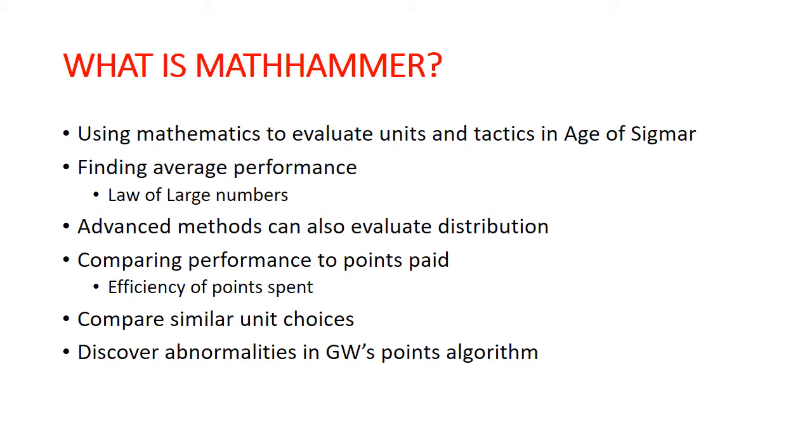So rather than saying this unit does 10 wounds on average, you can say that X percent of the time it's going to be between 8 and 12. And that will give you a little bit better of an idea of what to really expect from a unit. Because there are factors that are going to really skew the distribution, and the average doesn't necessarily tell the whole story.